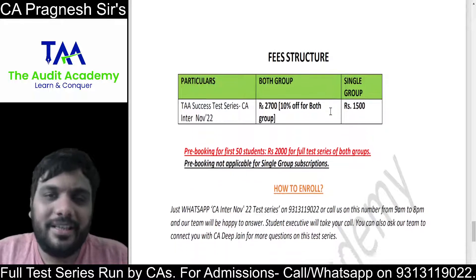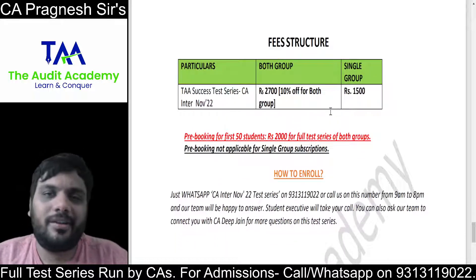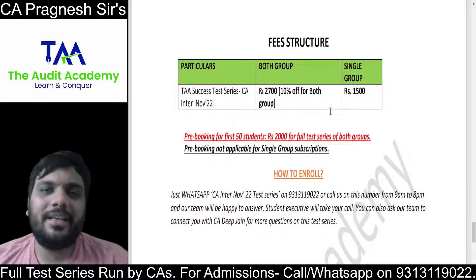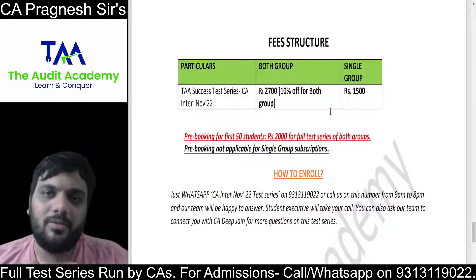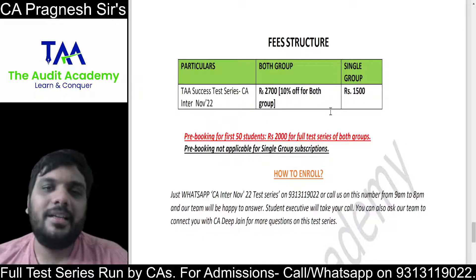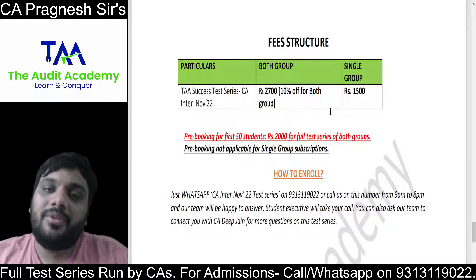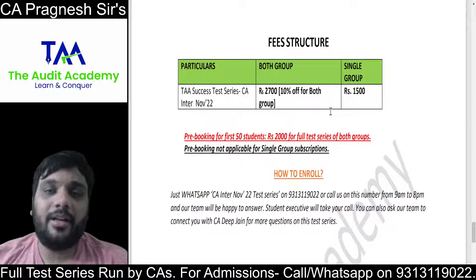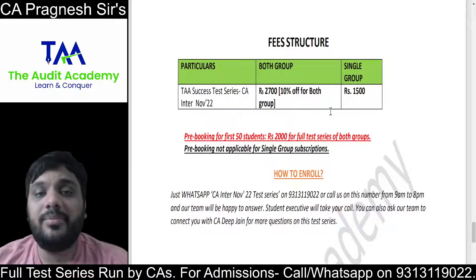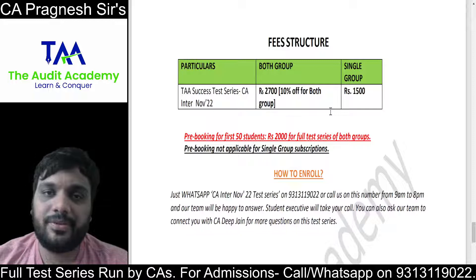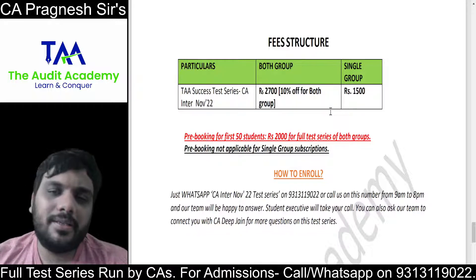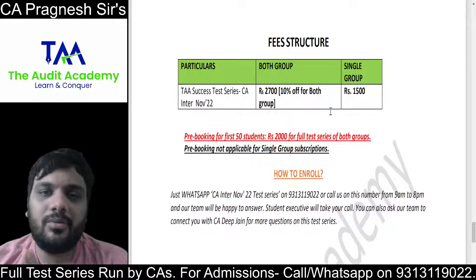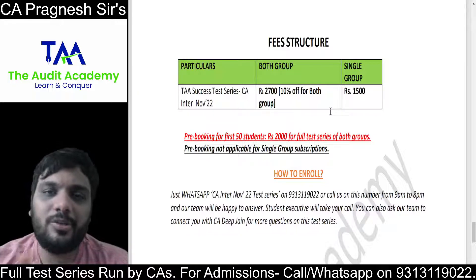The papers will be checked by CA Deep Jain and not by some juniors. Since there are currently only two of us — myself and CA Deep Jain — we will cap enrollments at 100 to maintain the teacher-student ratio. As the team expands, we will take more admissions. I will personally be checking only the Audit papers.